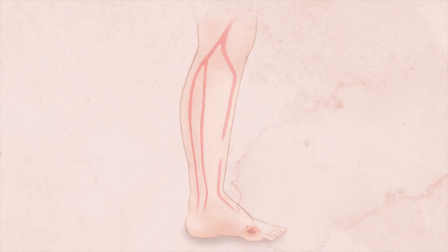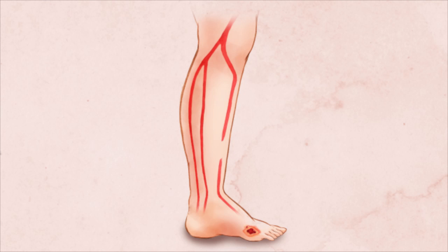Once the artery is satisfactorily opened, all the tools such as wires, catheters, and sheaths are then removed. The femoral artery access in the thigh is sealed, and the patient can usually go home within four to six hours.